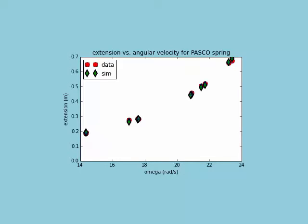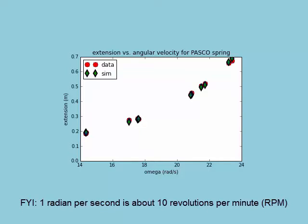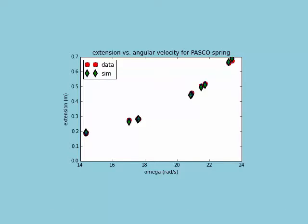Here are a few graphs to show our quantitative results. This one shows that the extension or stretch of the spring is greater the faster the angular velocity, omega, measured here in radians per second. Feel free to pause the video to look carefully. In this and the following graphs, the red circles are measurements off our video data, and the green diamonds are values for the same angular velocities from a computer simulation written by Tom. The simulation includes the effects of gravity and air resistance, or drag.